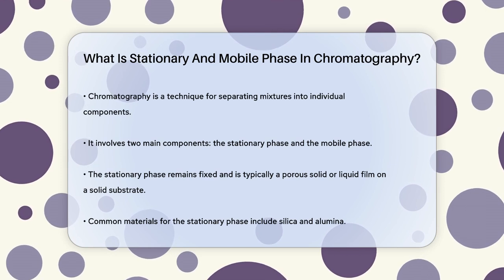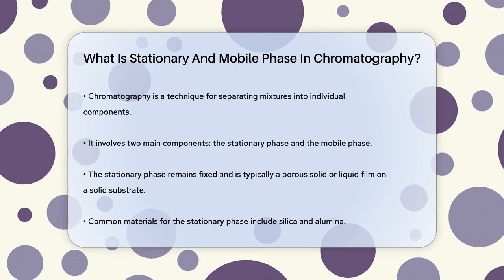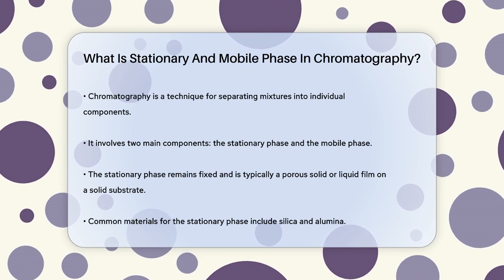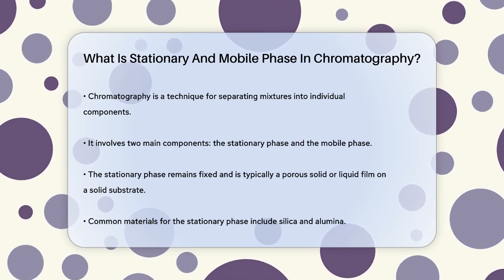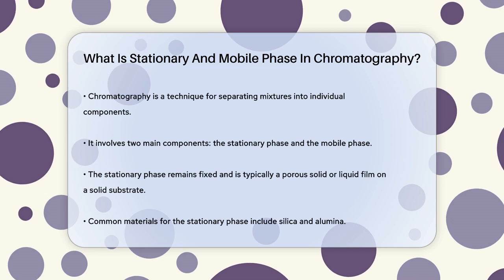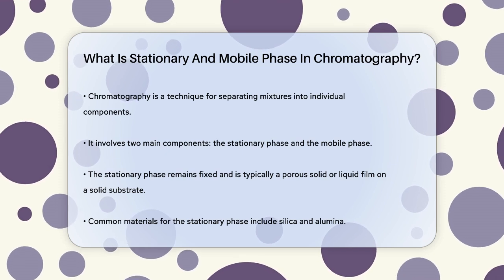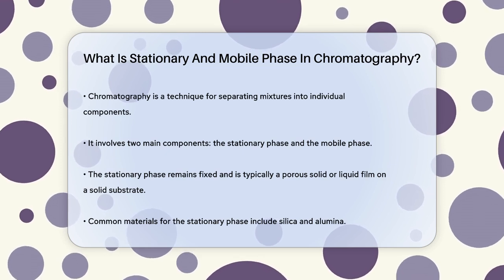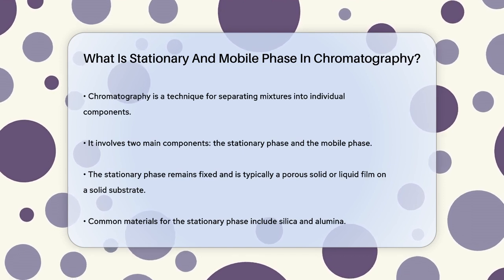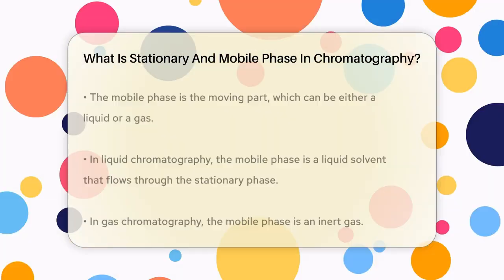To understand how it works, let's break down the two key components: the stationary phase and the mobile phase. The stationary phase is the part that stays in one place. It's usually a porous solid, like silica, alumina, or even a liquid film coated on a solid substrate. This material is packed into a column or spread out on a flat surface, like a plate or paper.